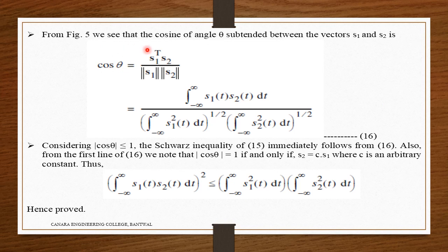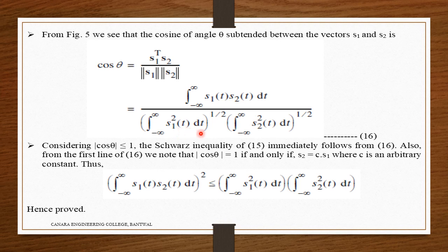From figure 5, the cosine of angle theta subtended between vectors S1 and S2 is: cos(theta) = S1_transpose · S2 divided by |S1|·|S2|. That equals the integration of S1(t)·S2(t) dt divided by the square root of the integration of S1(t) squared dt times the square root of the integration of S2(t) squared dt. Considering |cos(theta)| ≤ 1, the Schwarz inequality of equation 15 immediately follows from equation 16.